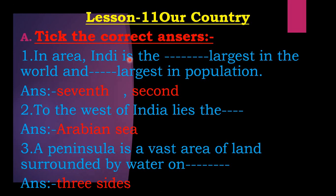Once again for section A: India is the seventh largest in the world and second largest in population. To the west of India lies the Arabian Sea. A peninsula is a vast area of land surrounded by water on three sides.